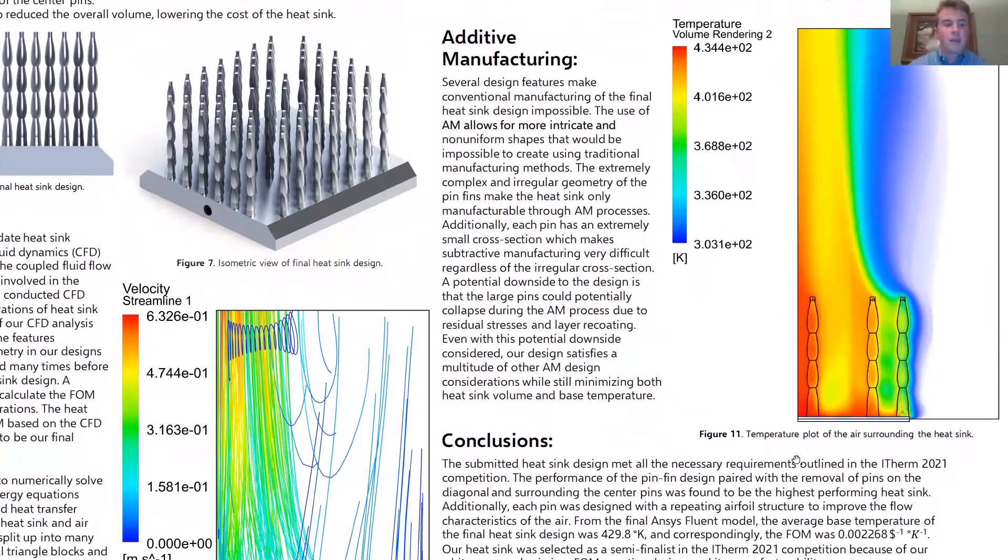Traditionally, heatsink designs were limited by several manufacturing constraints. However, with the increased use of additive manufacturing, we were given a lot more freedom with respect to different heatsink topologies. Many of the intricate and complex shapes implemented in our heatsink would have been impossible to produce with traditional manufacturing techniques. The airfoil pin fins in our heatsink, for example, have irregular and small cross-sections and can only be printed using additive manufacturing methods.